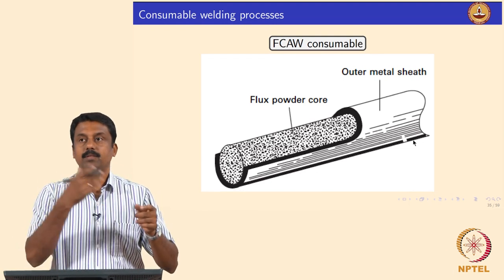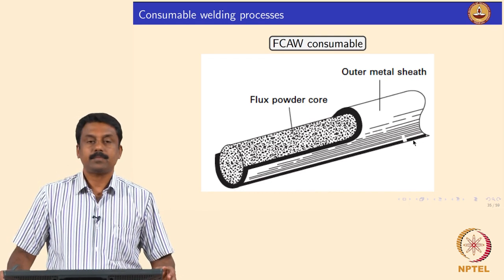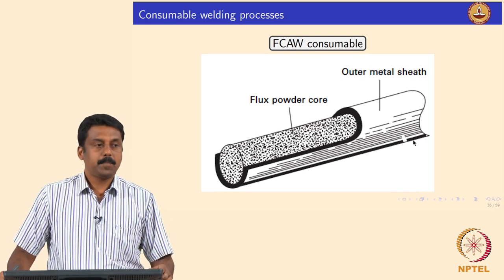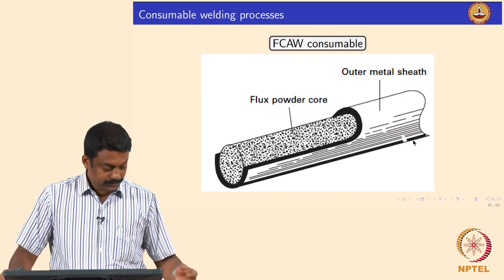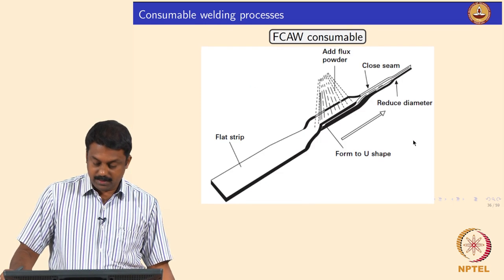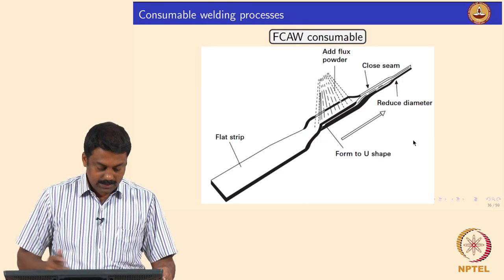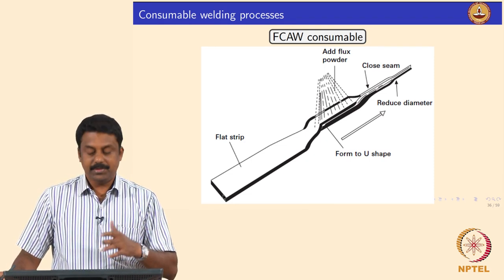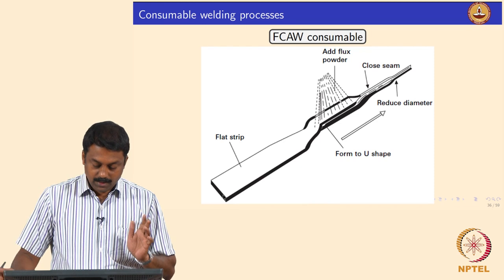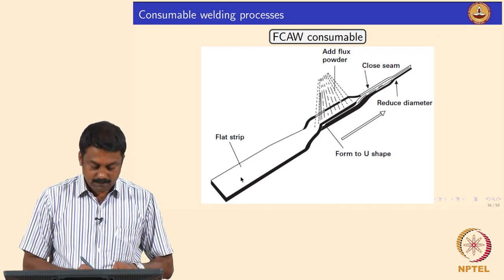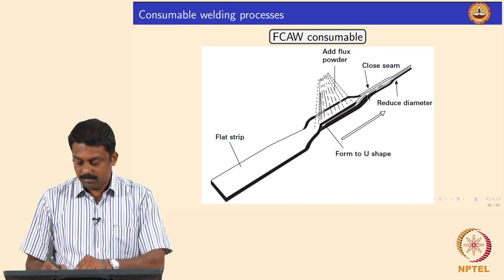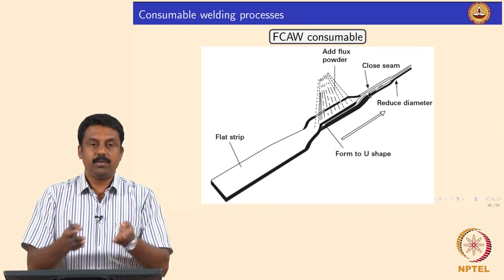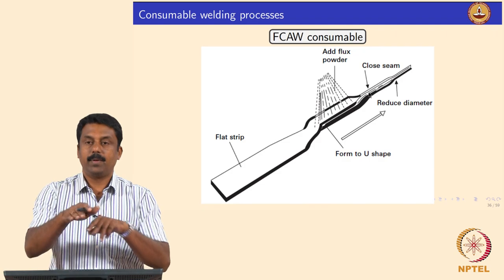Because it is a tube and the flux is not fully compacted, it can be made flexible and wound into a roll, which can then be used as a GMAW filler. The outer metal sheet has the composition of your interest, and you can also change the composition by changing the flux composition. You add flux powder onto a flat strip and send it through two rolls — the rolls fold it and you form a complete tube.